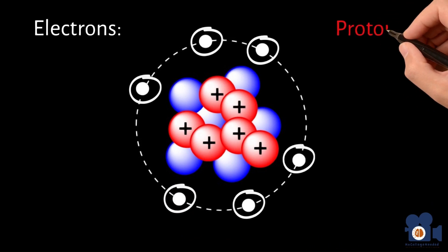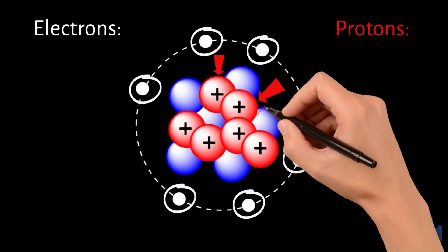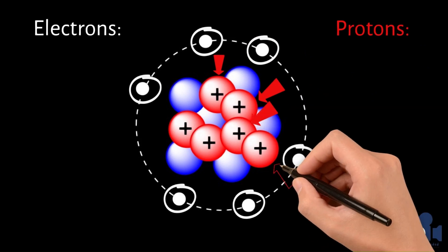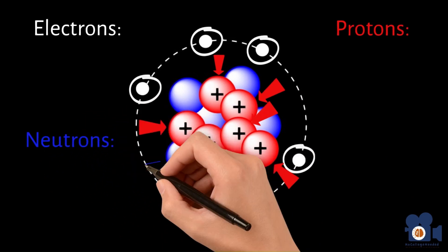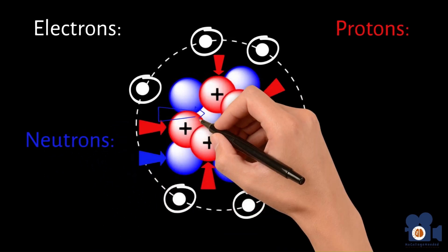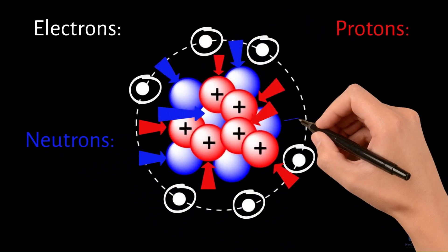The subatomic particle proton was discovered next in 1919 and was the positively charged counterpart to the electron, but contains approximately 2,000 times the mass. The neutron was discovered shortly after, in 1932, and it has approximately the same mass as the proton, but is neutral in charge.